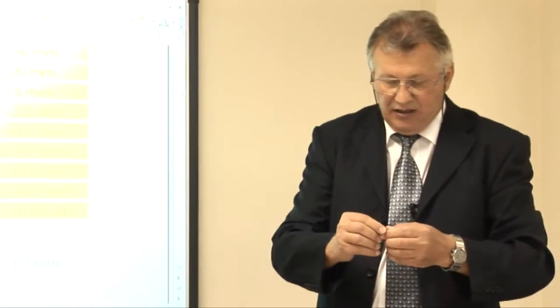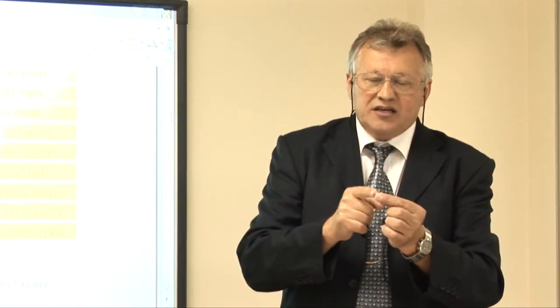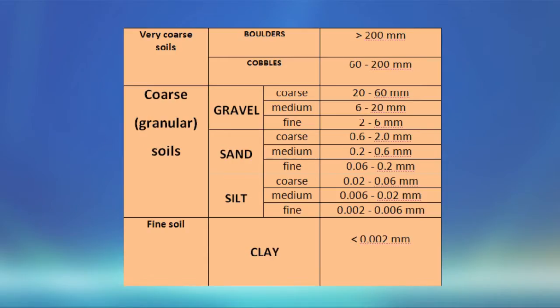These grains are all coming from different types of rocks. When the grain size is between 2 mm and 60 mm, we call the soil gravel. If the grain size is smaller than 2 mm, we call it sand, and if it is smaller than 0.06 mm, that is silt.